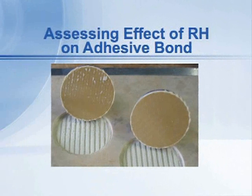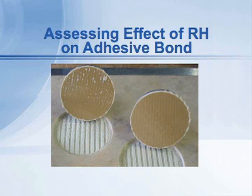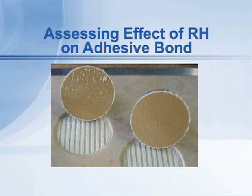Then we go along, as shown in the next picture, and we can actually pull the adhesive and the flooring off of the concrete by doing what's called adhesive bond tests, tensile bond tests, or shear bond tests. And those give us the strength of the bond after the concrete has been exposed to moisture for some length of time.